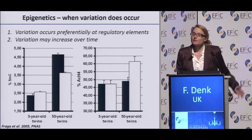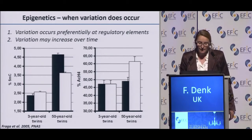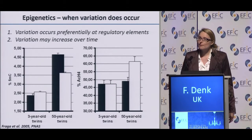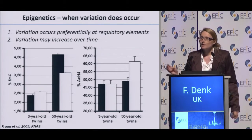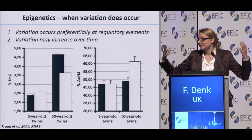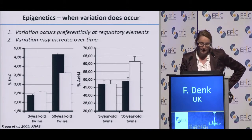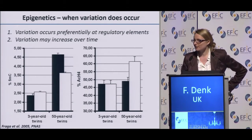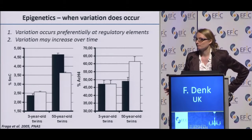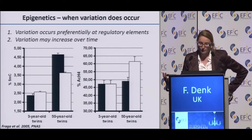Secondly, the variation in the epigenome seems to increase over time. This is data collected in monozygotic twins — remember, monozygotic twins don't just have the same DNA, they also come from the same zygote, and it's thought that the zygote determines your epigenome. In three-year-old monozygotic twins, as one would expect, their global DNA methylation and histone acetylation levels are very similar. When you compare this to 50-year-old twins, suddenly you see big changes emerging, suggesting that what happens to us throughout our lifetimes can have an impact on our epigenome.